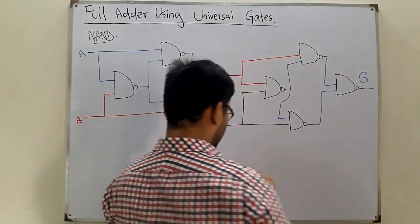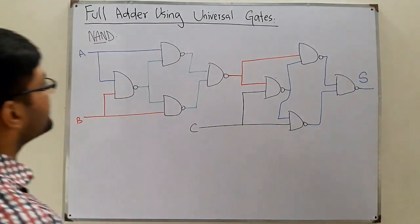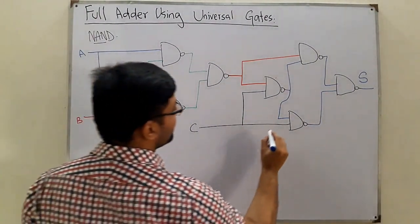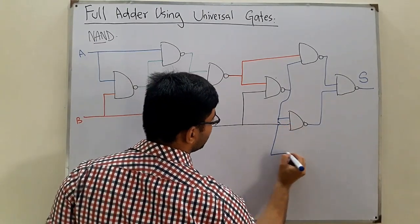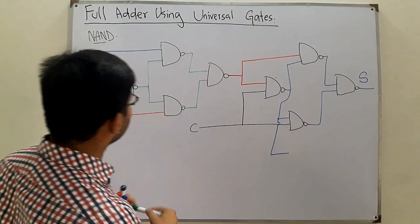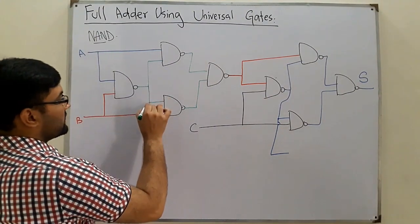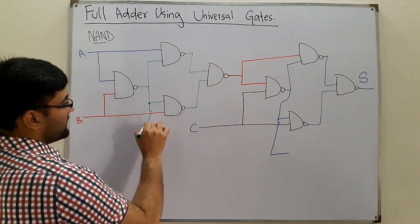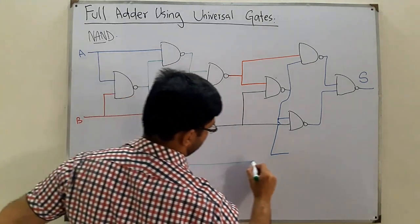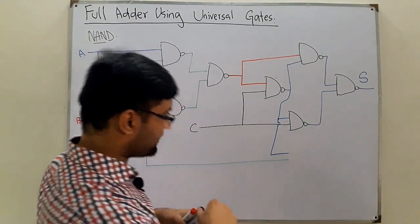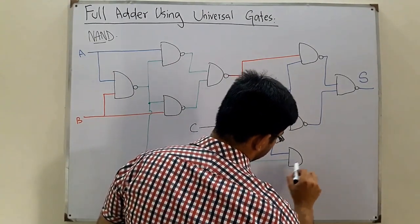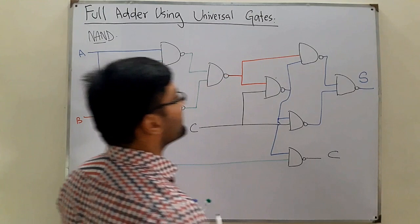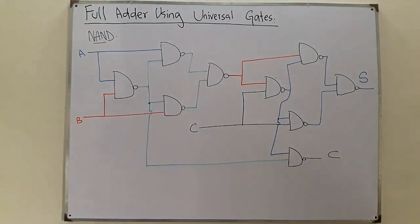For the carry, you take one input from this point and one input from another point, and you NAND them together. This will give you the carry output.